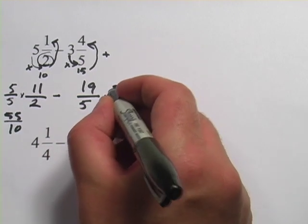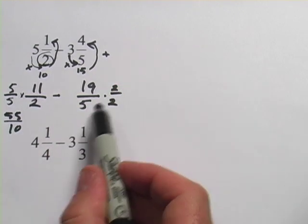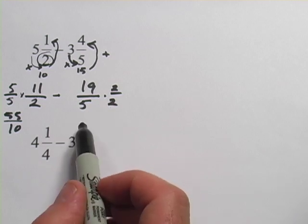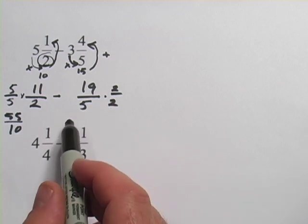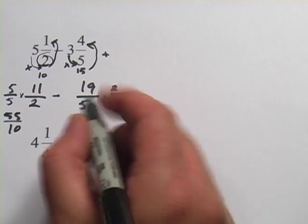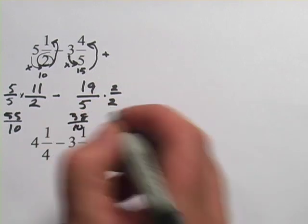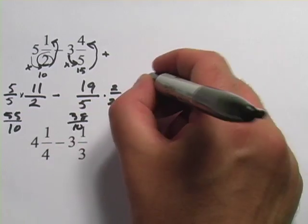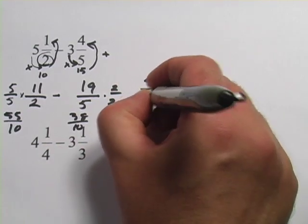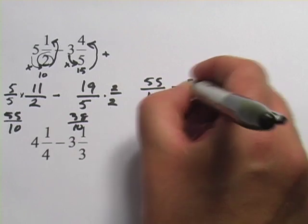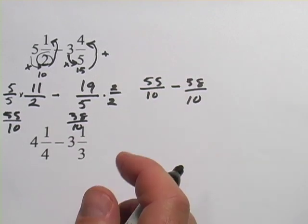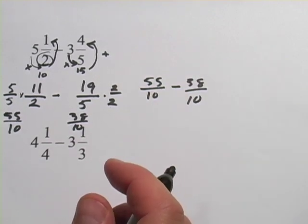Now over here, I can multiply by 2 over 2. And I'll get a denominator of 10 as well. And then we can finally do the subtraction. Well, 19 times 2 is 38. And 5 times 2 is 10. Let me rewrite this over here now. So we've got 55 over 10 minus 38 over 10. A lot of steps to get there.